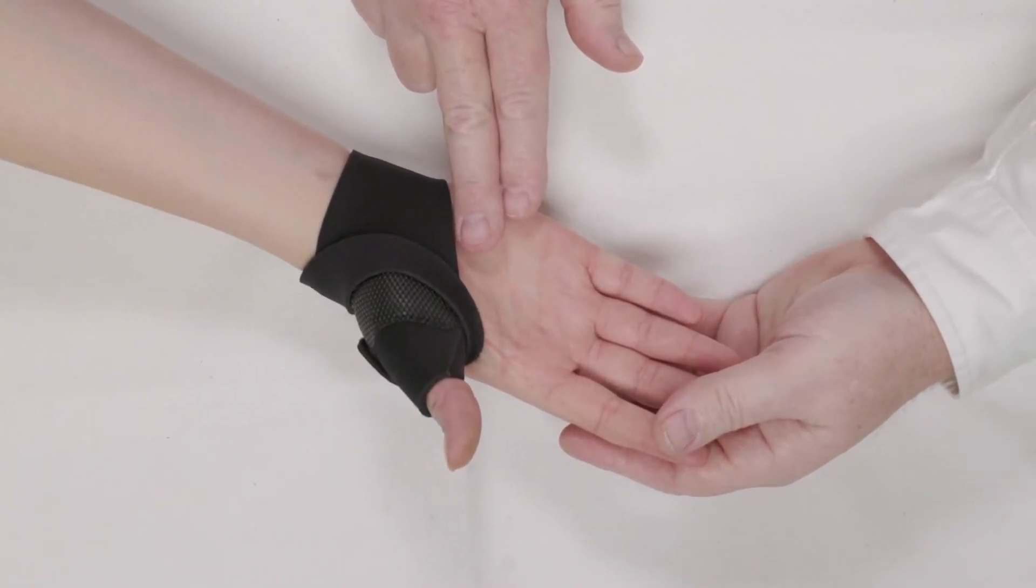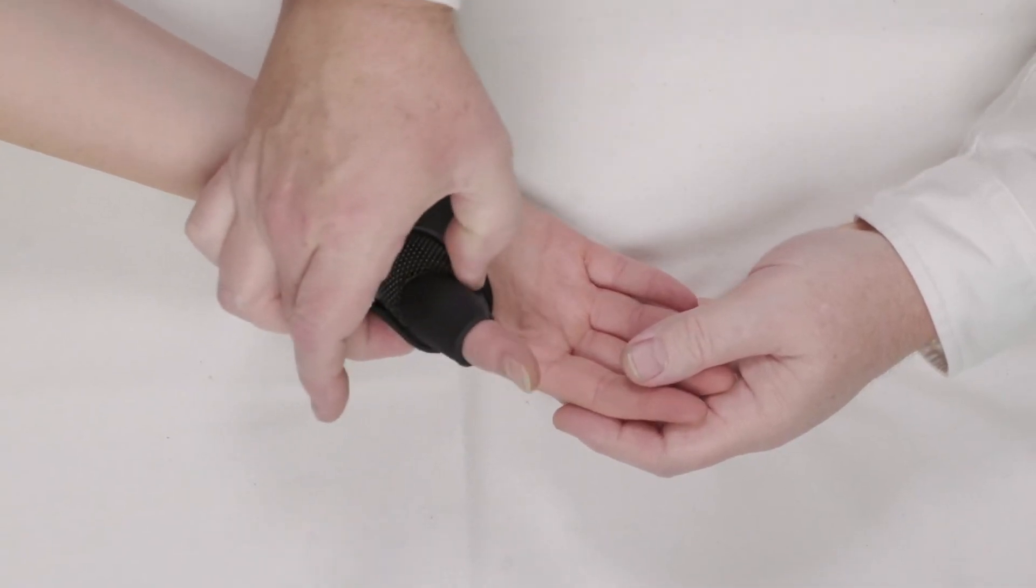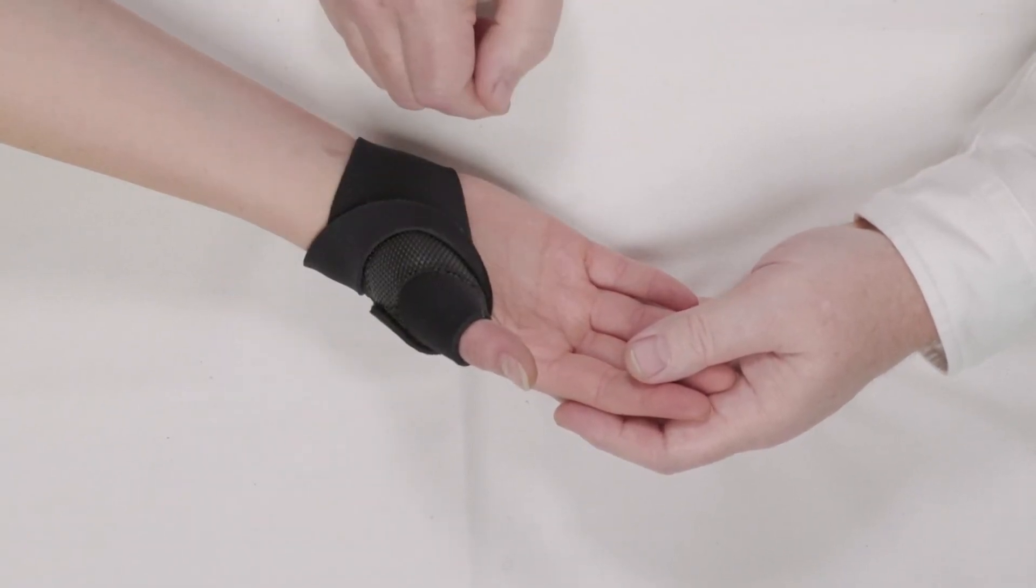It's super comfortable to wear and it's reimbursable because of the design and because of the stay that's been incorporated into the brace. PDAC has assigned this an L3924 code, making the cost-to-reimbursement ratio acceptable to the practice.